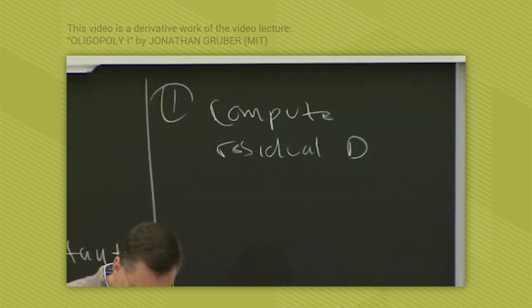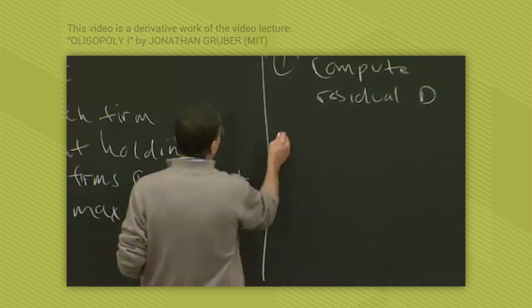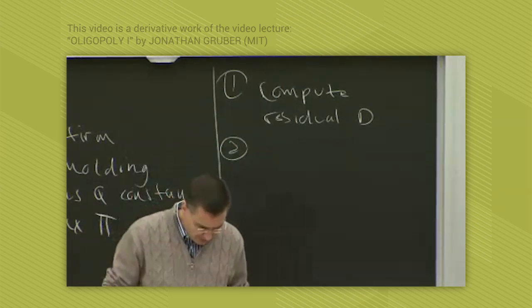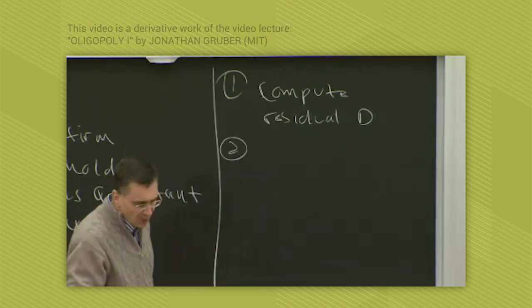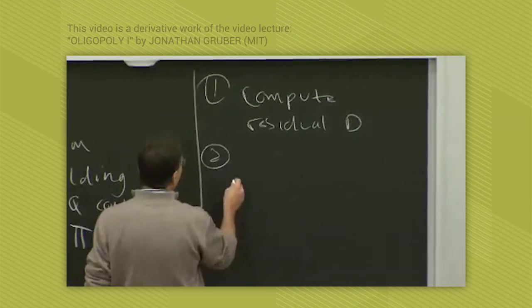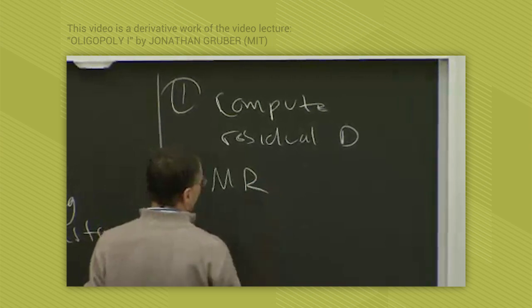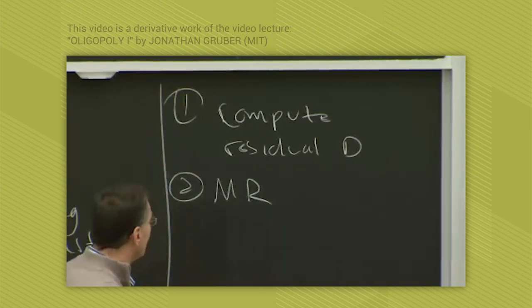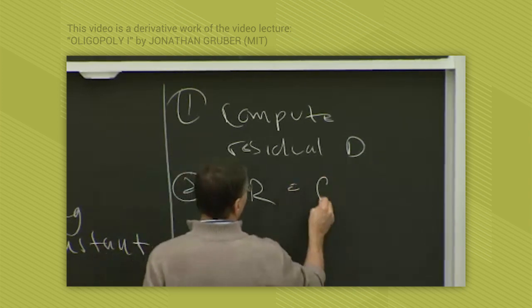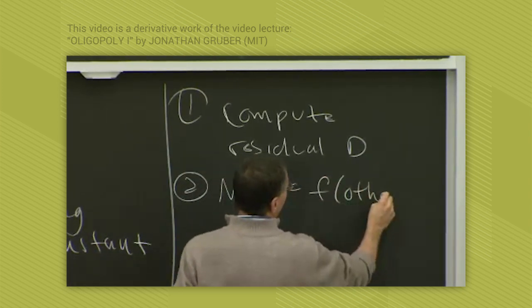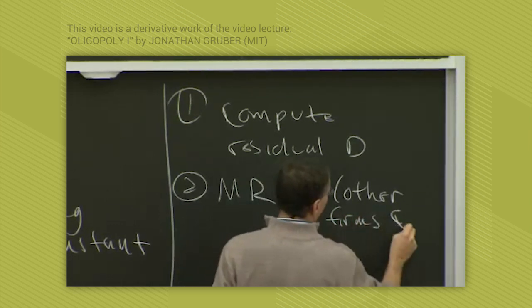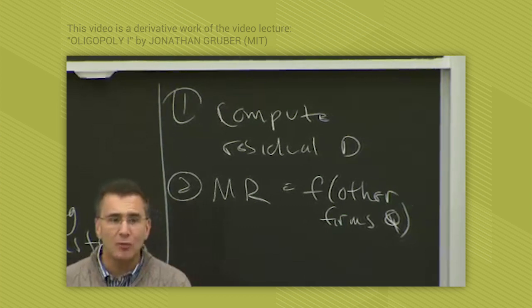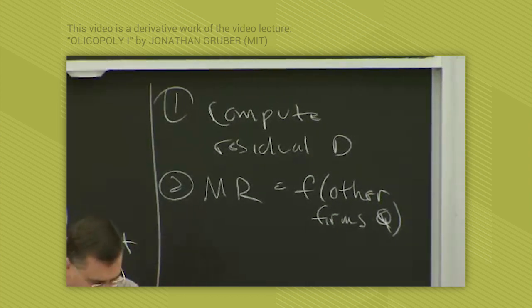Then having computed your residual demand, you basically develop a marginal revenue function. You calculate your marginal revenue, which will be a function of other firms' quantities. So your residual demand will lead you to calculate a marginal revenue function as a function of other firms' quantities.